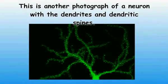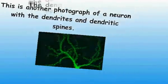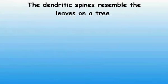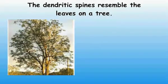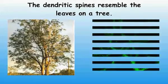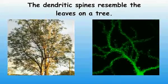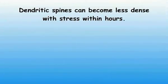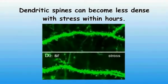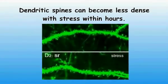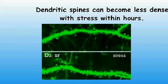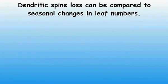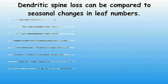This is another photograph of a neuron with the dendrites and dendritic spines. What do you think it resembles? The dendritic spines resemble the leaves on a tree. The dendritic spines are plastic and can become more dense or less dense in a matter of hours. This photograph shows how stress reduces dendritic spine numbers. The reduction of dendritic spine numbers may be compared to the reduction of leaves on a tree from summer to winter.